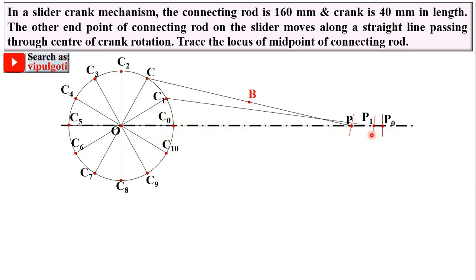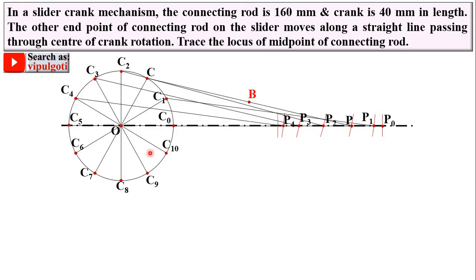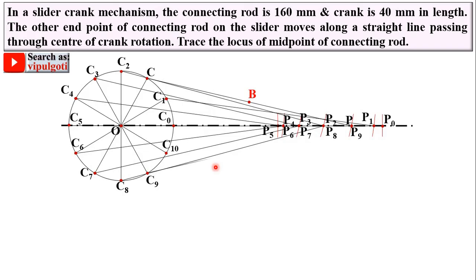Join C1 to P1. Similarly, locate P2 then join C2-P2; locate P3 then join C3-P3; locate P4 then join C4-P4; locate P5 then join C5-P5; locate P6 then join C6-P6. Similarly join C7-P7, C8-P8, C9-P9, and finally C10-P10.